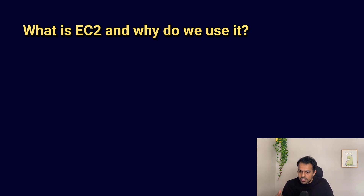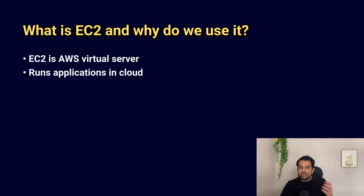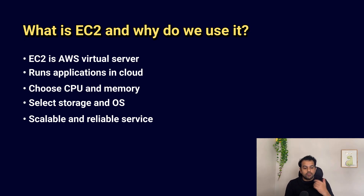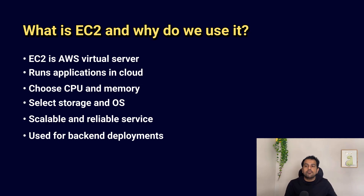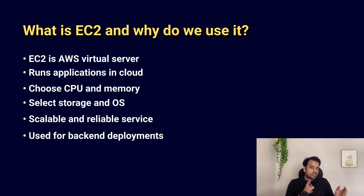The next question is: what is EC2 and why do we use it? EC2 is part of AWS — it is a virtual server that allows you to run applications on cloud-based machines. You can choose CPU, memory, storage, and OS. It is scalable, reliable, and easy to configure. We mainly use EC2 instances to deploy backend services, APIs, or batch jobs — instead of running in-house servers, we use cloud servers like AWS.